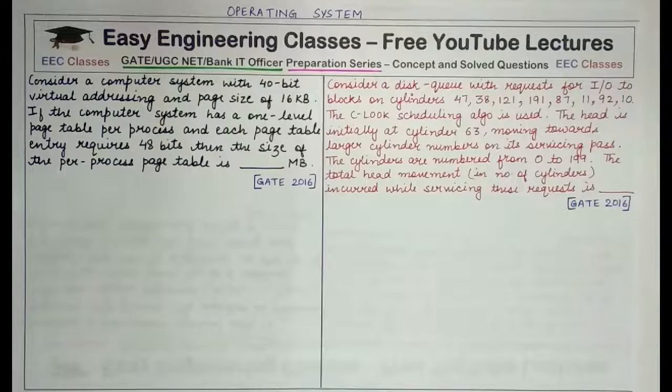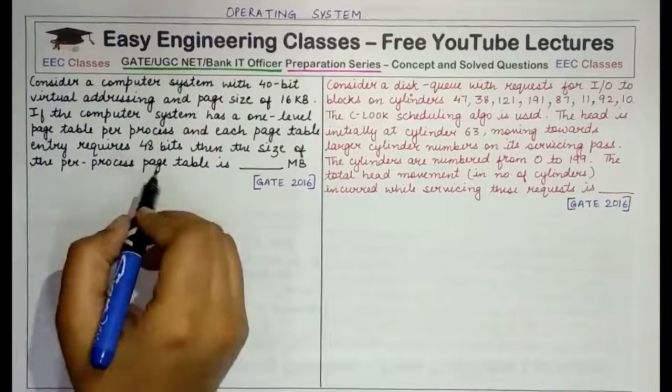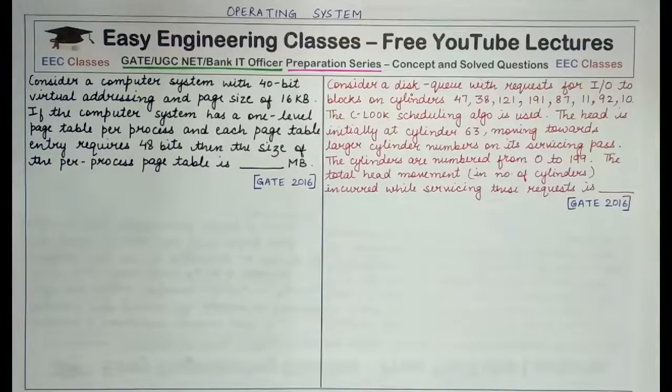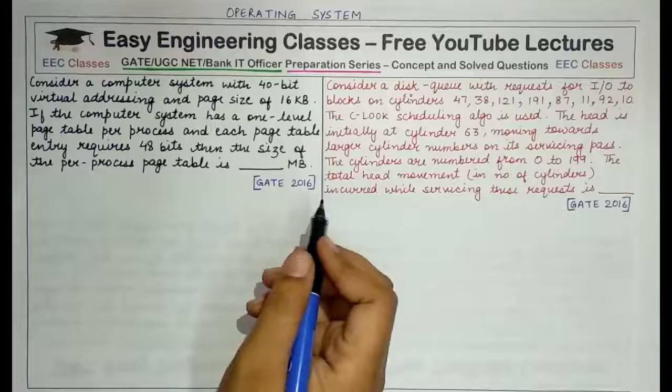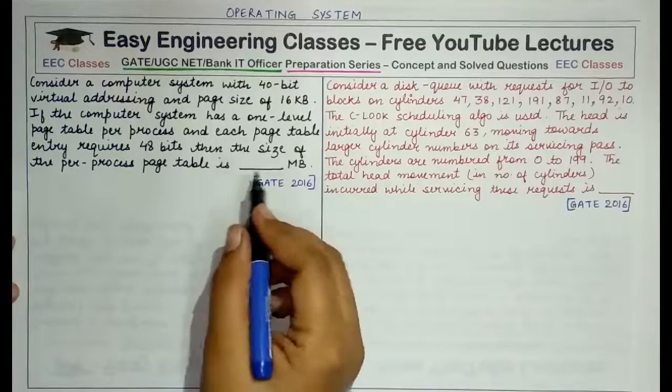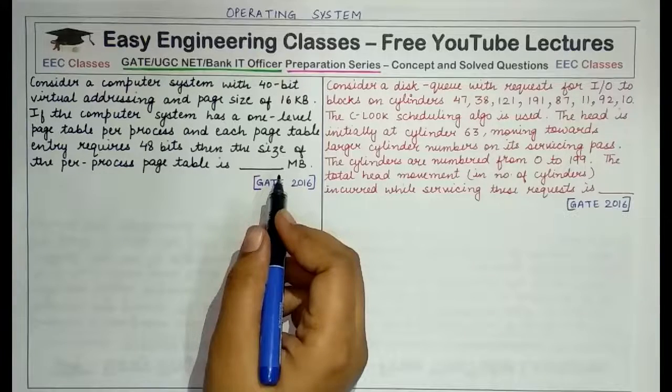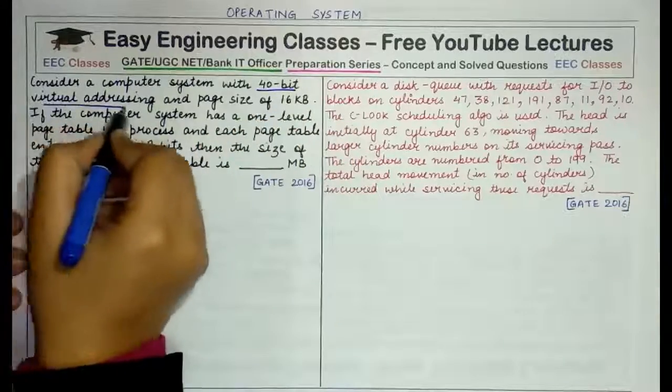Both questions appeared in GATE 2016 paper. The first question asks you to consider a computer system with 40-bit virtual addressing and page size of 16 kilobytes. If the computer system has a one-level page table per process and each page table entry requires 48 bits, then the size of the per process page table is dash MB. Both of them are numerical type questions, so you are not provided any options and you have to solve and enter the answer.